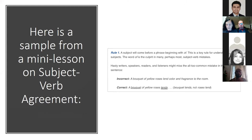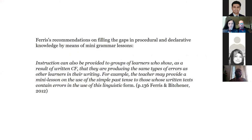In order to fill this gap in students' competence — because they were being given instruction only in the rhetorical dimension of writing — I gave them each day a mini lesson in grammar with repeated practice. This is in line with Ferris's recommendation: instruction can only be provided in groups of learners who show, as a result of written corrective feedback, that they are producing the same types of errors. For example, the teacher may provide a mini lesson on the use of the simple past tense to those whose written text contains errors in that linguistic form.